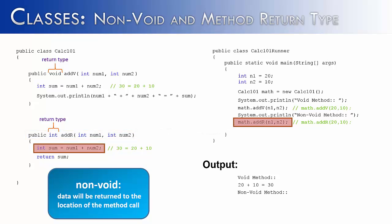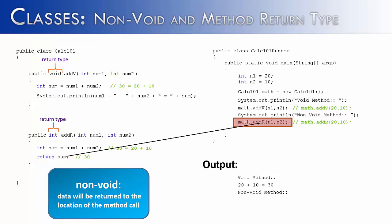Just like the last method, addR is going to add the two numbers together — 20 plus 10 is 30 — but the difference is going to come with the keyword return. What it's going to return to the program is the value 30. So that value gets sent back to the main method. But there's a problem: the main method doesn't do anything with it. You'll see that 30 was sent back but there's no System.out.println or anything to handle it.